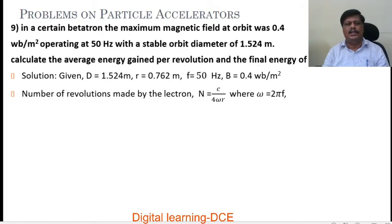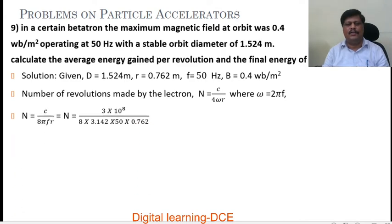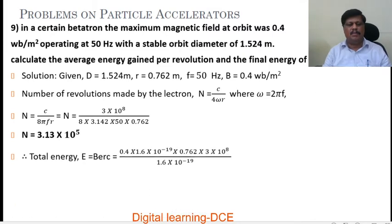The magnetic field B is 0.4 Weber per meter square. The number of revolutions made by the electron in a betatron is given by n equals c divided by 4 omega r, where omega equals 2 pi f. Substituting, we get n equals c by 8 pi f r. With c equals 3 into 10 power 8, substituting pi, frequency, and radius, after simplification we get n equals 3.13 into 10 power 5 revolutions.